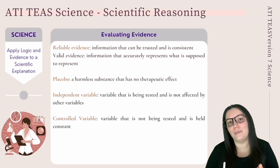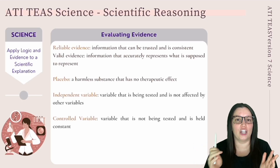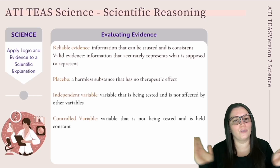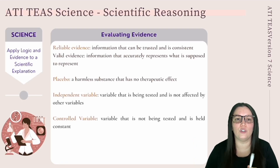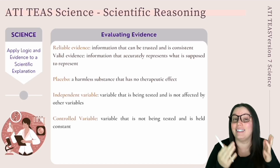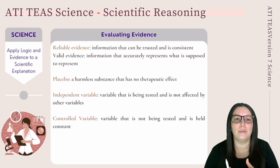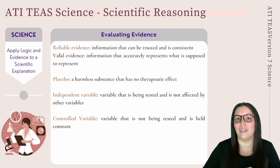Scientists also rely on independent and controlled variables. An independent variable is the variable being tested and is not affected by any other variable. A controlled variable is not being tested and is held constant. For example, when testing a new drug, the independent variable is the drug and the controlled variable is the patients' disease. By keeping the controlled variable constant, scientists can be sure that any changes observed are due to the independent variable.